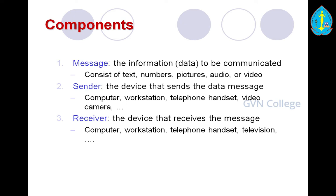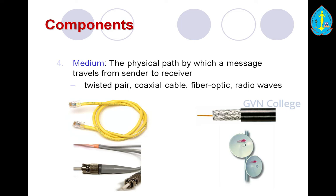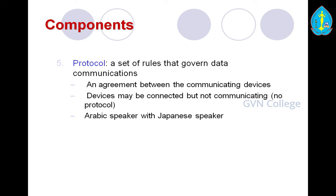The fourth component is the medium — the physical path by which a message travels from sender to receiver. Examples include twisted pair cable, coaxial cable, fiber optic cables, and radio waves. These are mainly used for data communications in the network. The last important component is protocol — a set of rules that govern data communications, an agreement between the communicating devices. Devices may be connected but not communicating if there is no protocol — similar to an Arabic speaker and a Japanese speaker needing a common protocol to communicate.